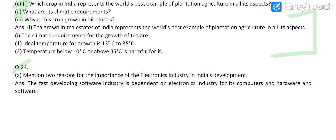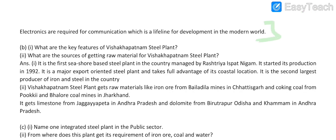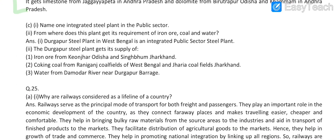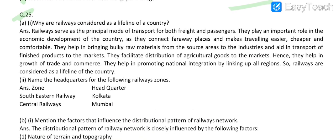Question number 24: first part — answer is this. Part B (first and second parts) — answers are given here. Part C (first and second questions/parts) — first part answer is this and second part answer is this. The zone and headquarters are the heading: Southeastern Railway — Kolkata, Central Railway — Mumbai.